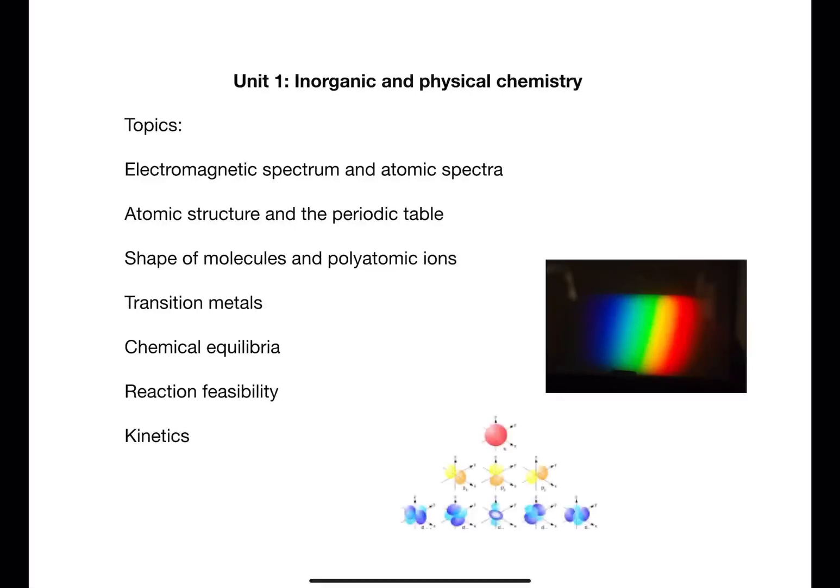Unit 1 is inorganic and physical chemistry. Inorganic chemistry is the study of substances that are not carbon based, while physical chemistry is about how reactions happen. The electromagnetic spectrum topic looks at calculations relating to energy levels and how this leads to different spectra, allowing more detailed information about atomic structure to be covered.